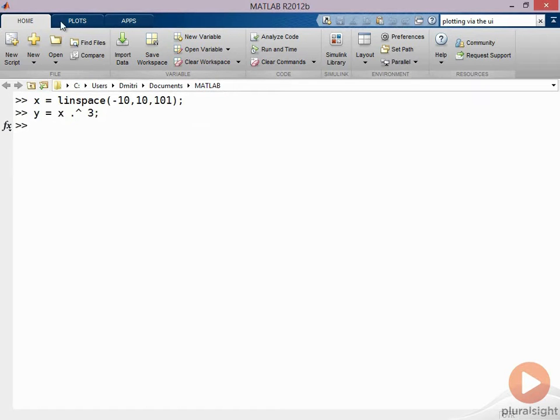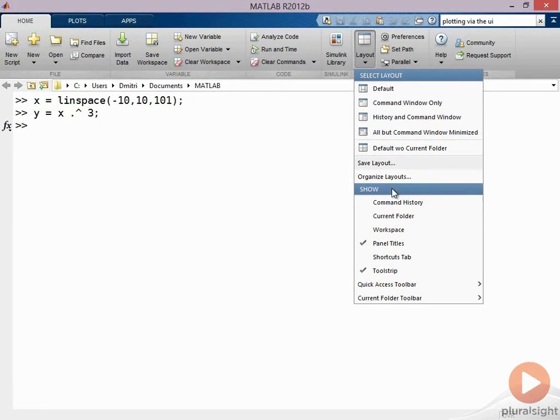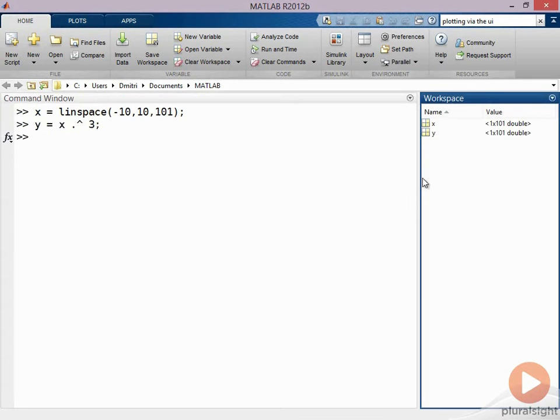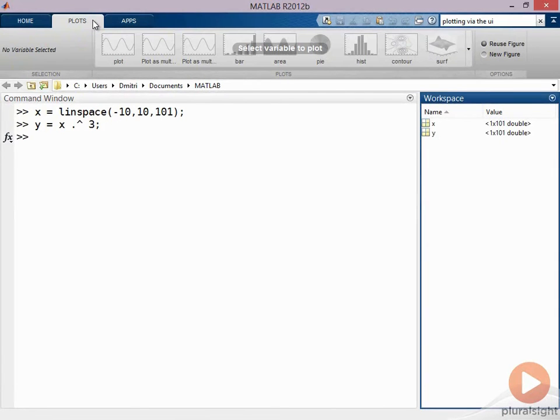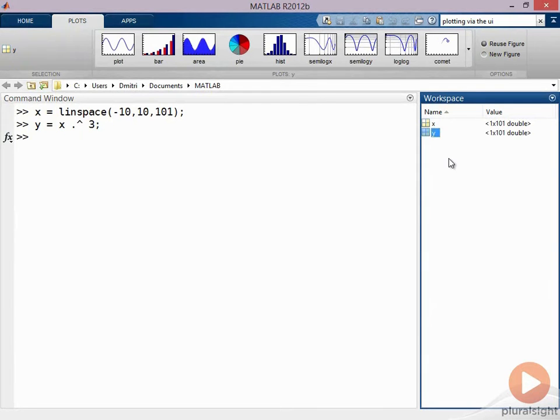Now if I open up the plots tab, I need to actually bring up the workspace as well to see my variables. You'll see that it's not really letting me do anything right now. I can't select anything, but as soon as I select any variable, even a single variable, it already lets me do something.